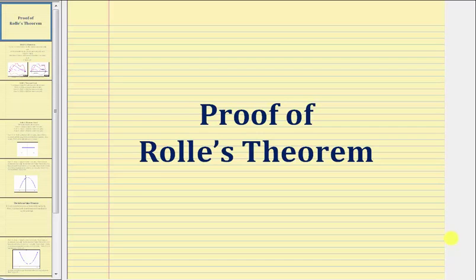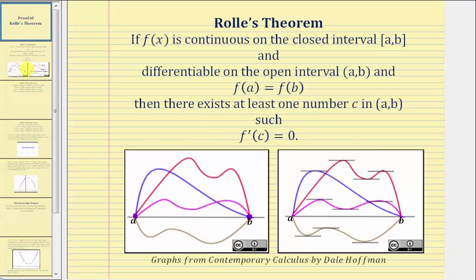Welcome to a proof of Rolle's Theorem. Rolle's Theorem states that if f of x is continuous on the closed interval from a to b, and differentiable on the open interval from a to b, and f of a equals f of b, then there exists at least one number c in the open interval from a to b such that f prime of c equals zero.